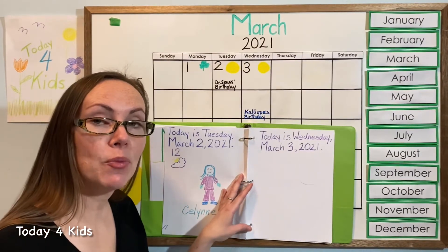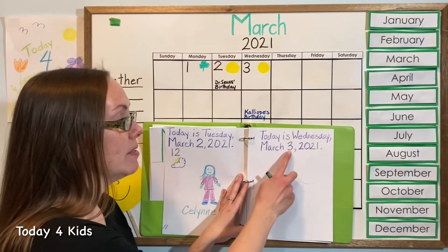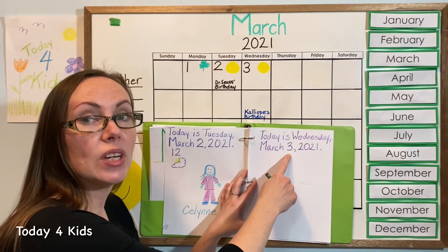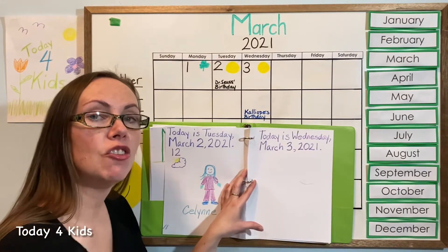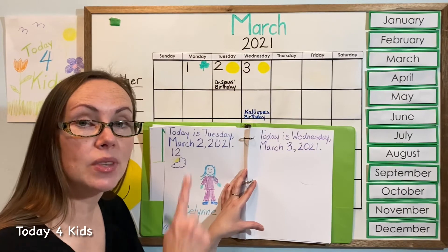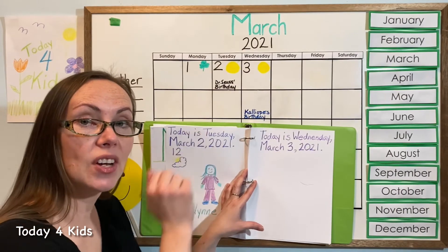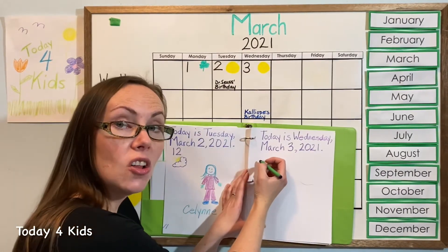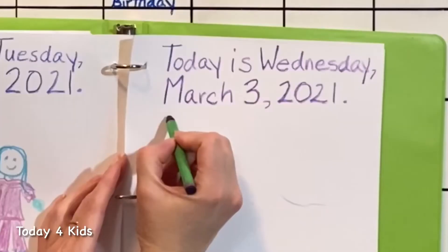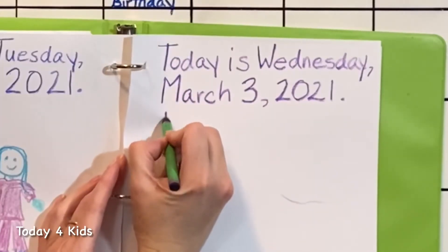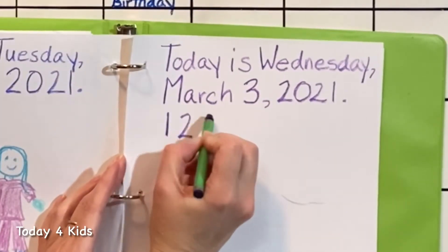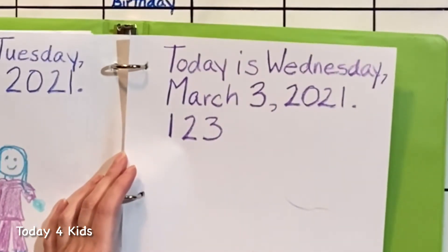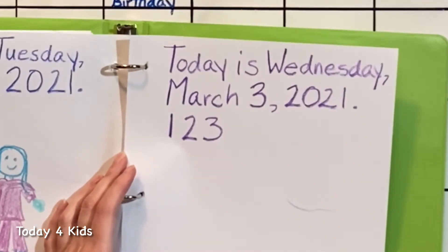Now I'm going to practice making my numbers all the way up to number three. I want to practice making my numbers every day so I get really good at them. You can practice on your paper or with your finger in the air, or you can just count with me — all those ways are great ways to practice. Are you ready? One, two, three. That was nice and easy — just three numbers today.